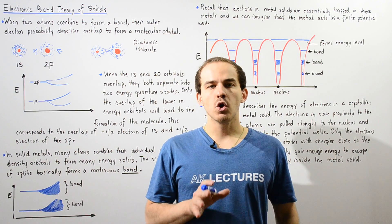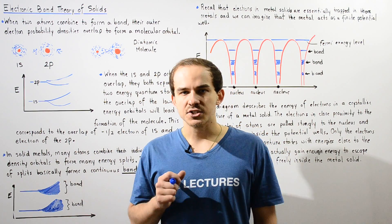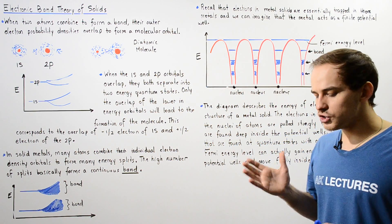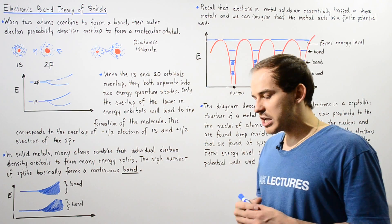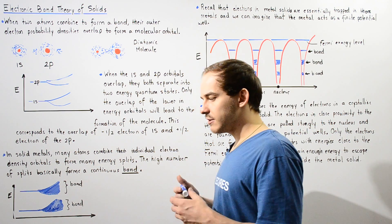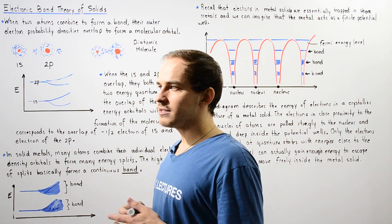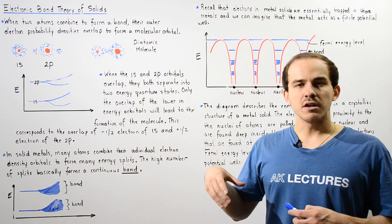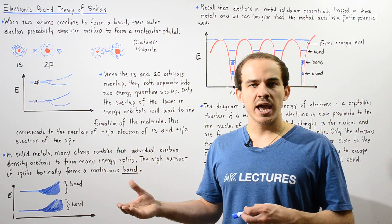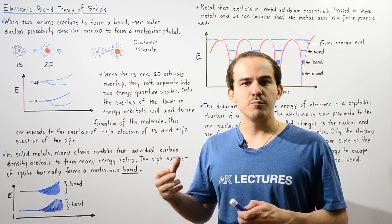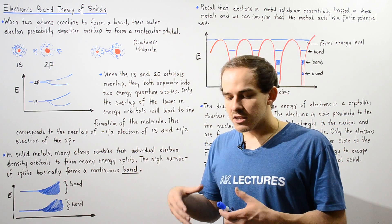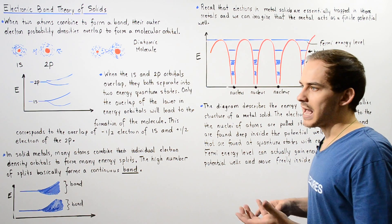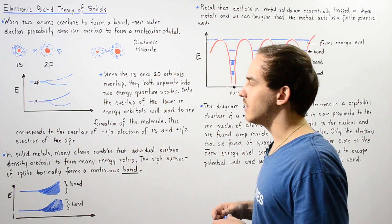In this lecture, we're going to discuss the electronic band theory of solids, also known as the band theory of solids. This theory basically describes the quantum states that electrons take inside metal solids — the way that electrons behave inside our metal solids.